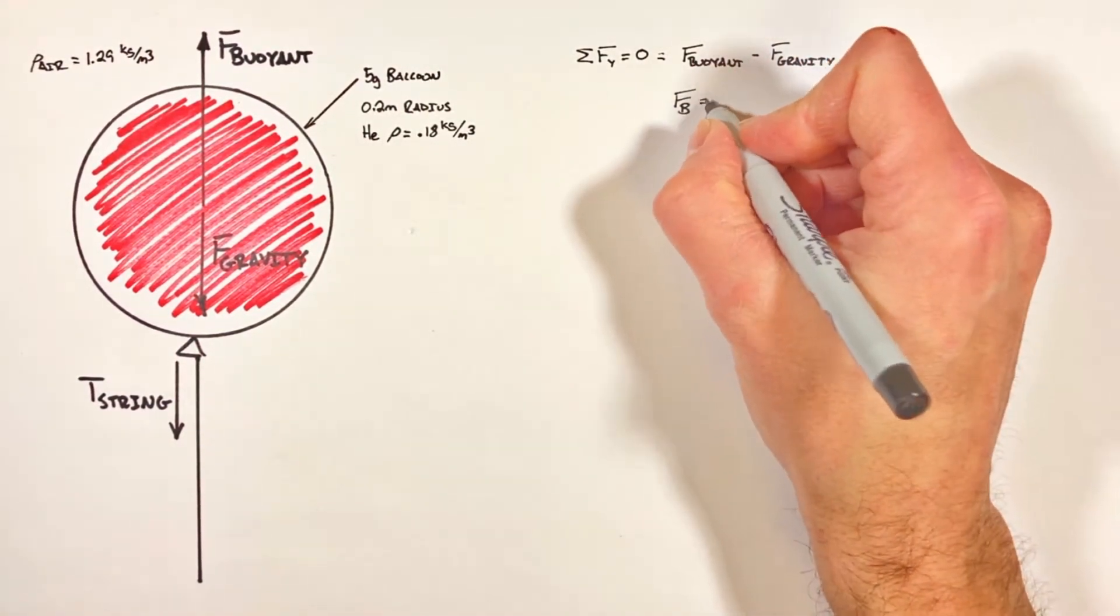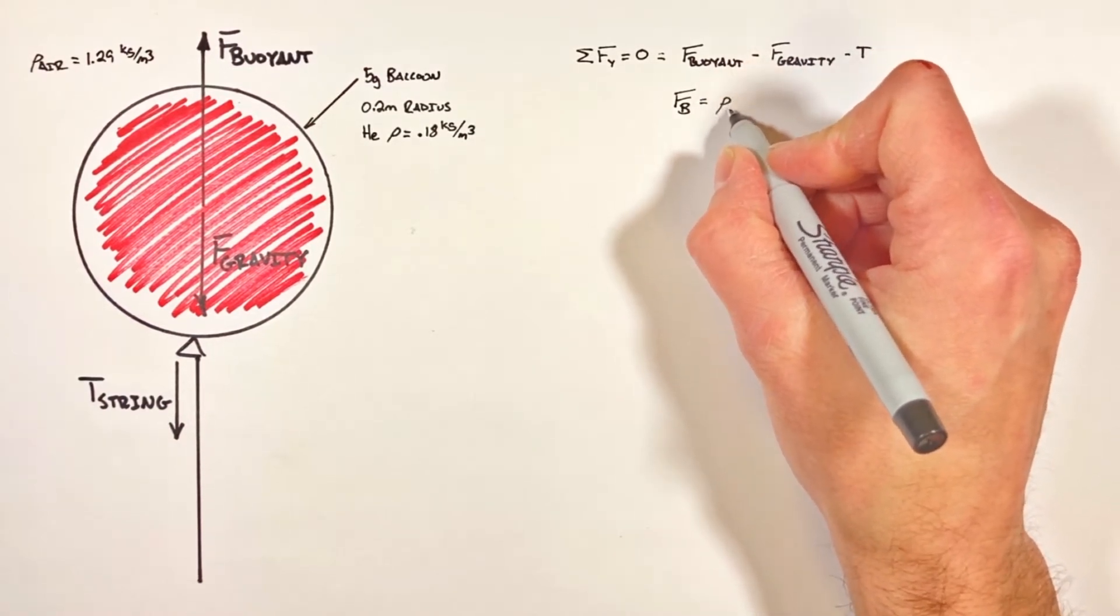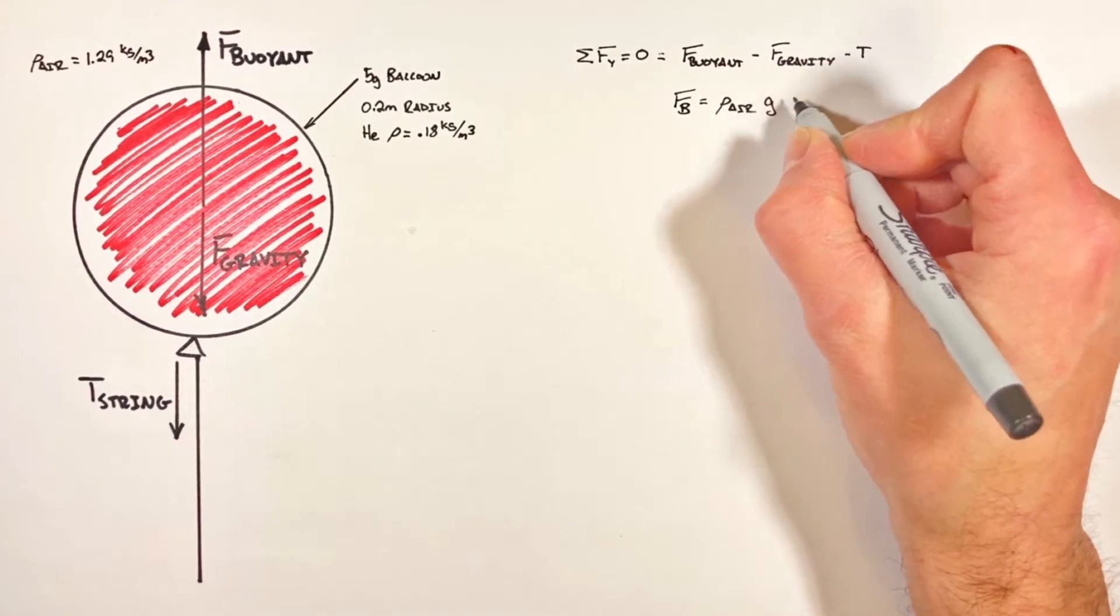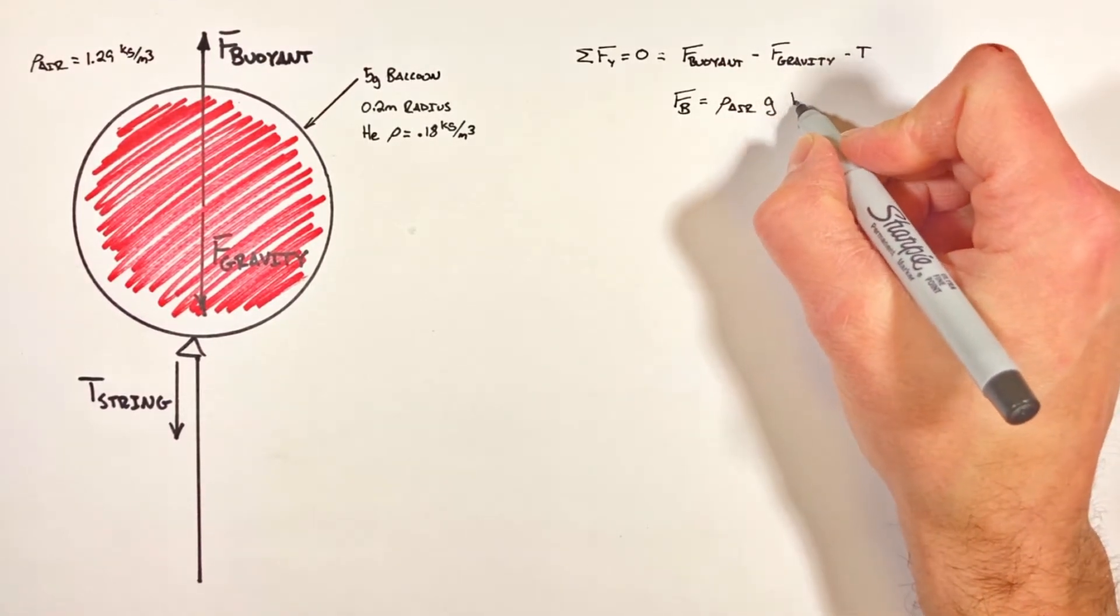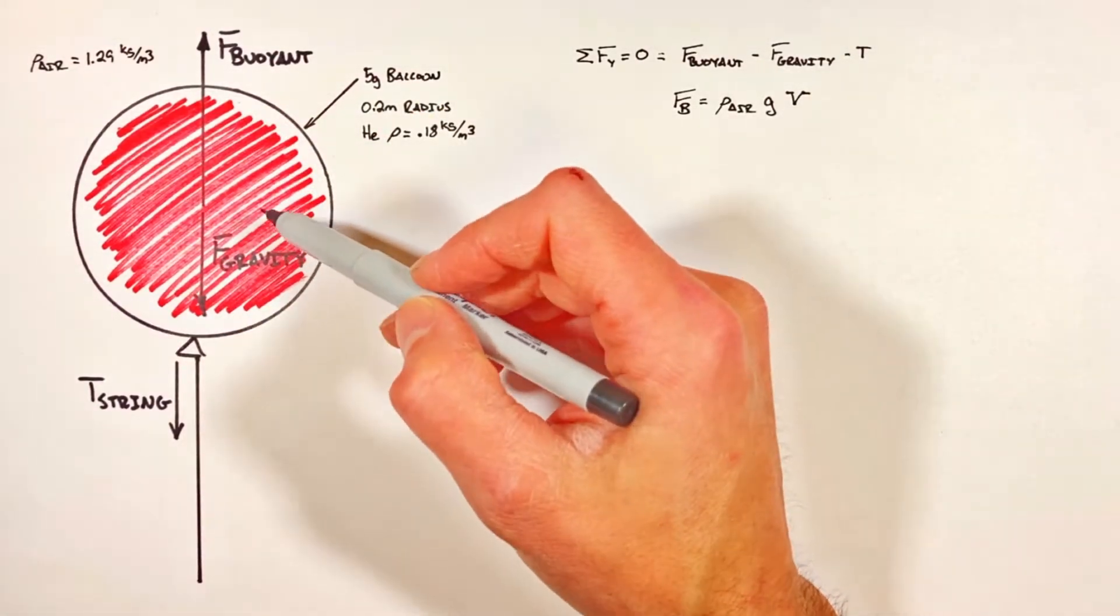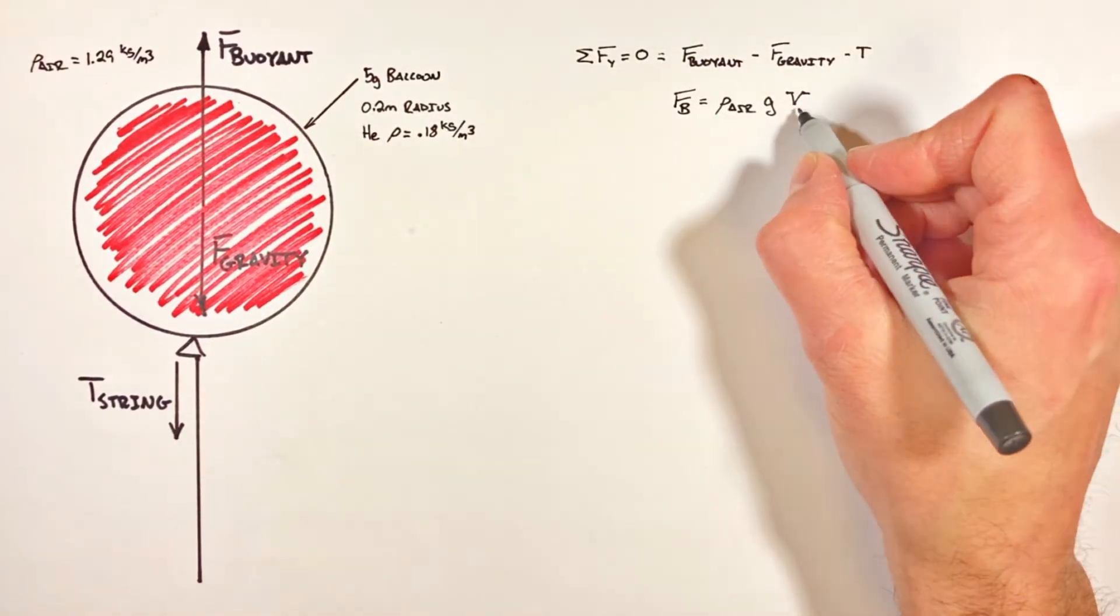Starting with the buoyant force, according to Archimedes' principle, the buoyant force is given by the density of the fluid, in this case air, multiplied by g, multiplied by the volume of fluid displaced. Because the balloon is entirely immersed in air, the volume of air displaced is the volume of the balloon.